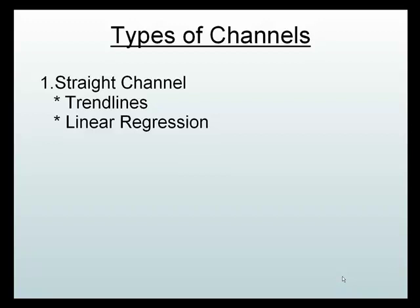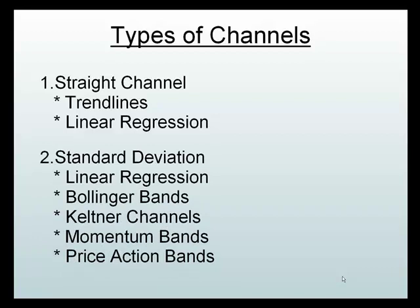In the first video we talked about straight channels — examples include trend lines, consolidation lines, and linear regression. Linear regression can also fall under standard deviation because linear regression lines sit at a standard deviation from the middle, whereas trend lines you draw yourself. Under standard deviation channels we have the popular Bollinger Bands, Keltner Channels, and Momentum Bands. We spent the first two videos explaining those, and now I'm going to introduce Price Action Bands as something a little new.